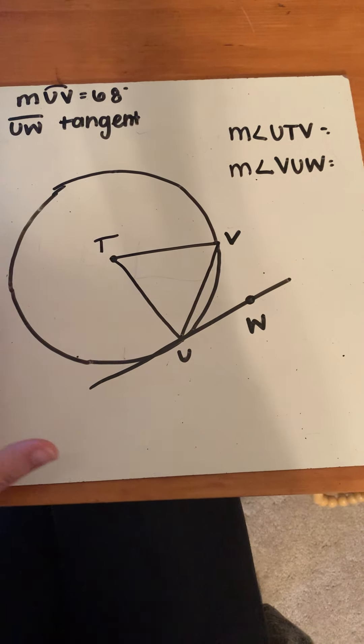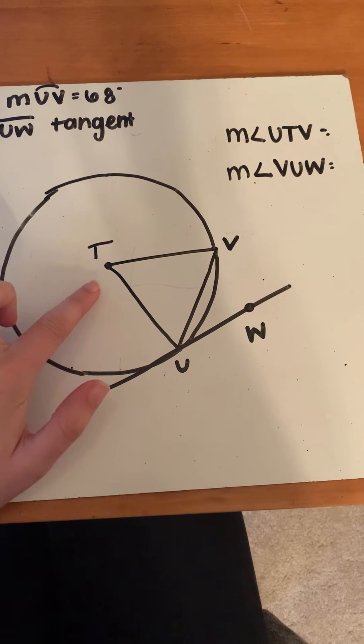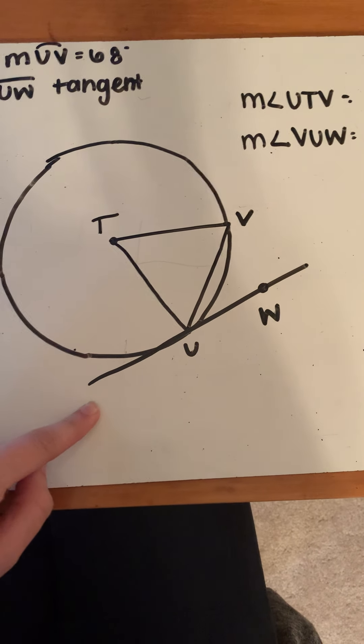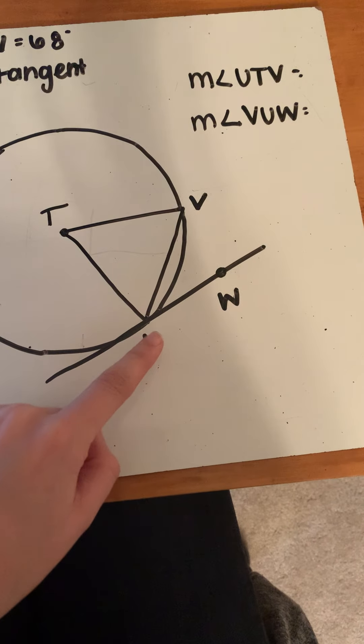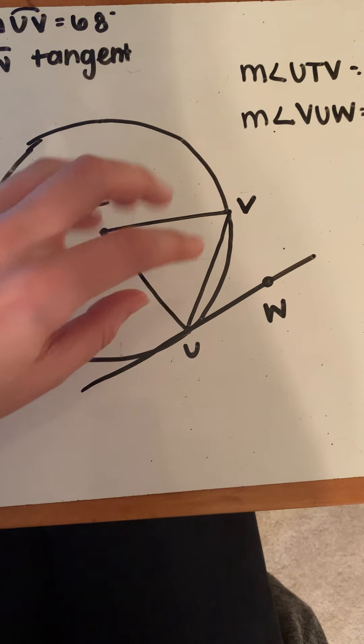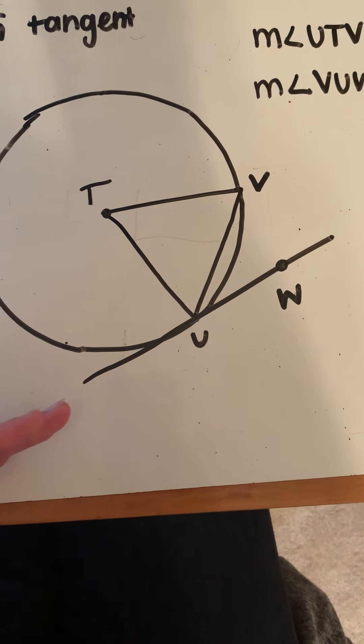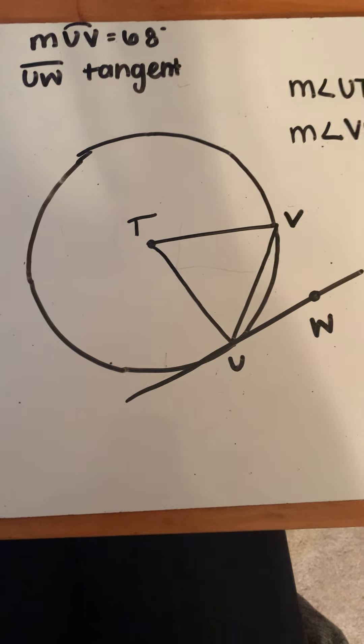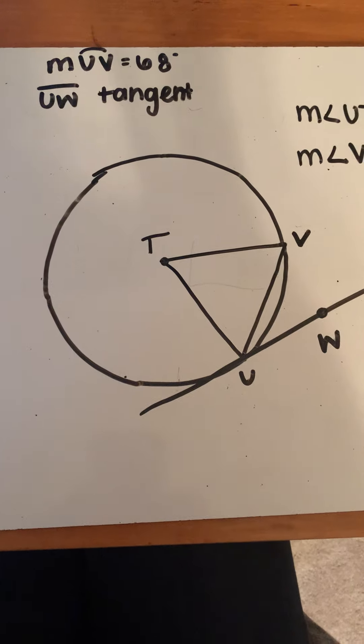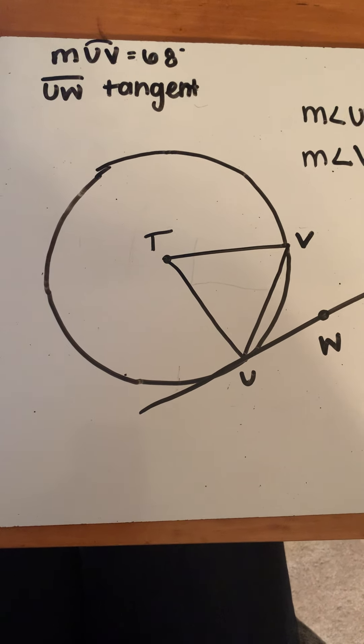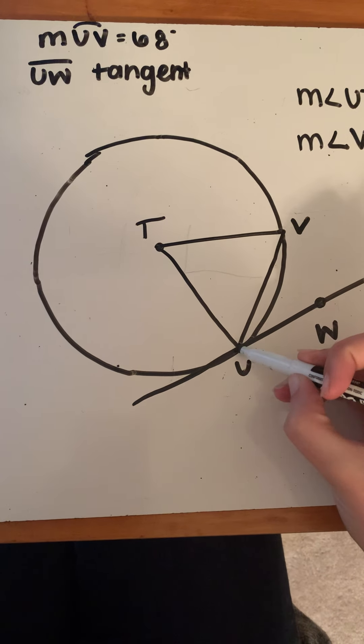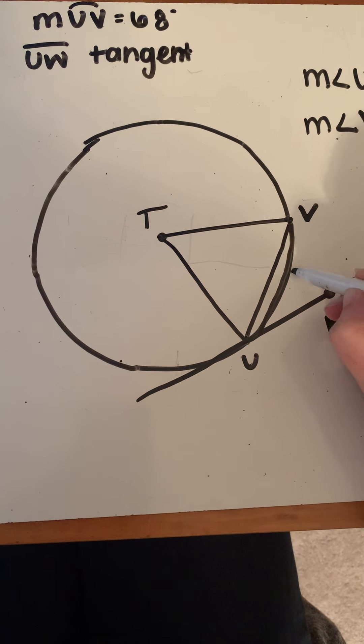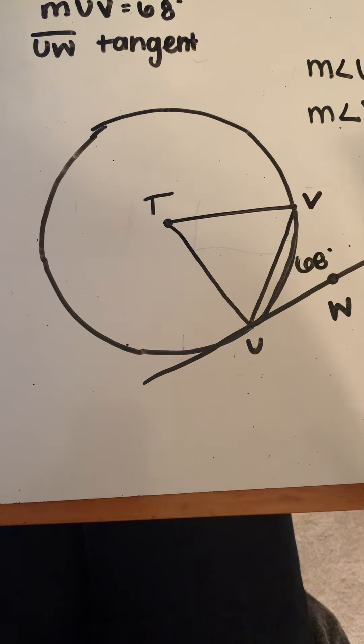Here's the picture. We've got our circle with center T, with a couple lines going in there. We also have a line called a tangent. Remember, a tangent line touches the circle but never actually goes inside the circle itself. So we have our tangent line UW gracing the outside of that circle. They tell us that arc UV is 68 degrees.